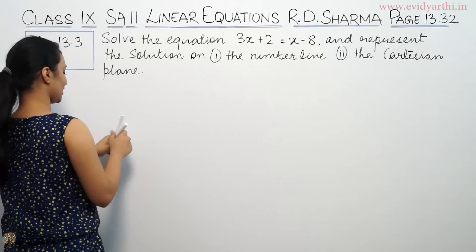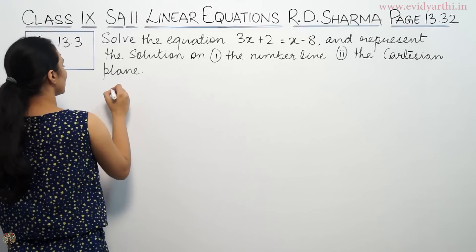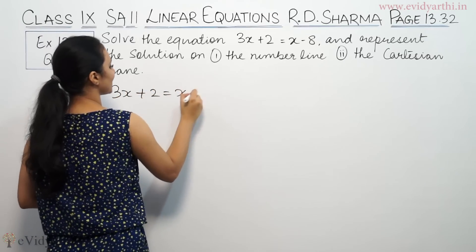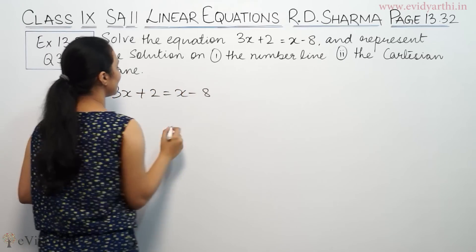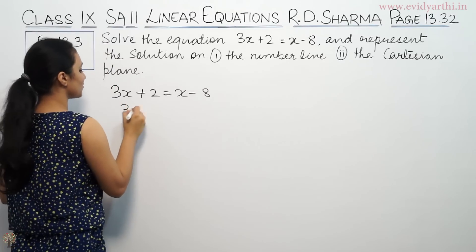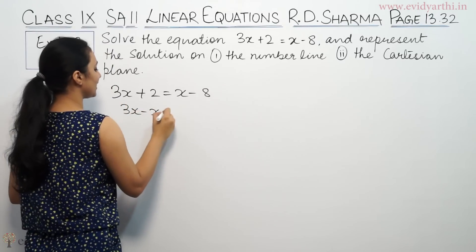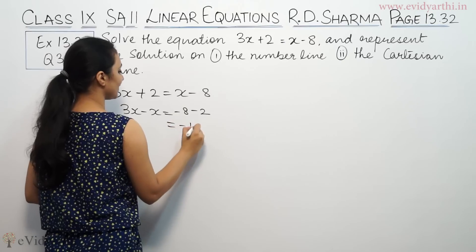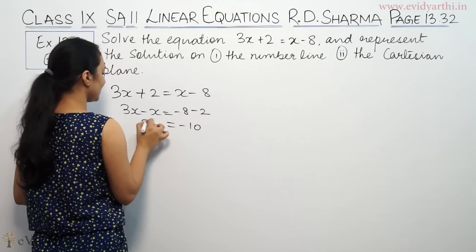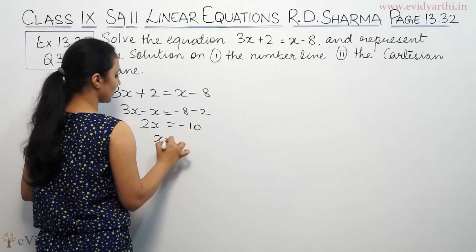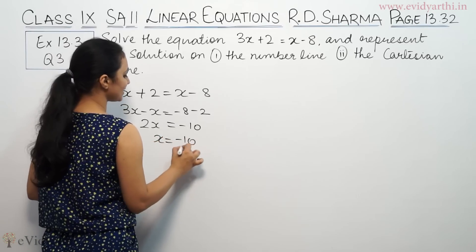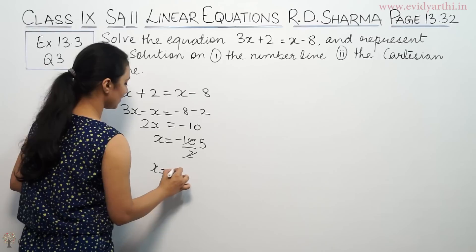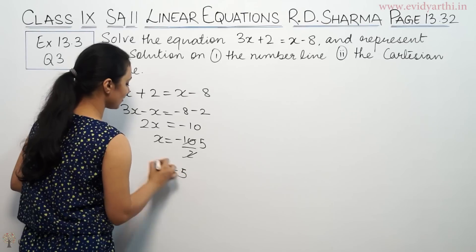First of all, we have the equation 3x plus 2 equals x minus 8. We will solve this. This will be 3x minus x equals to minus 8 minus 2, that means minus 10. This is 2x. So x will be minus 10 by 2, so x will be minus 5.